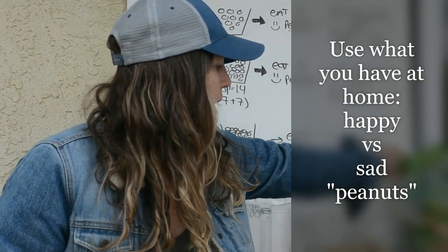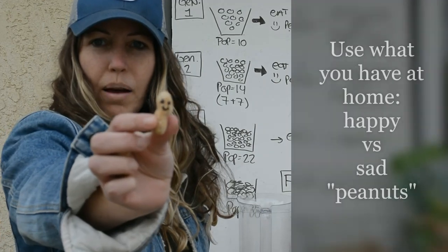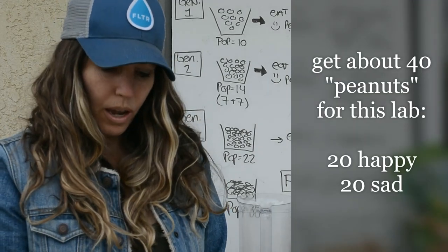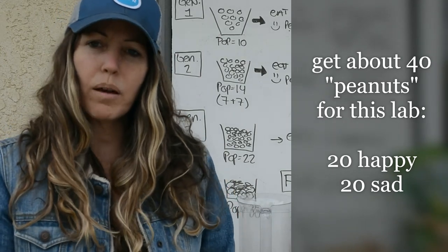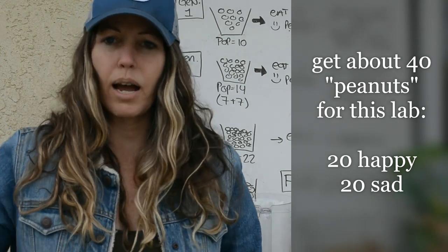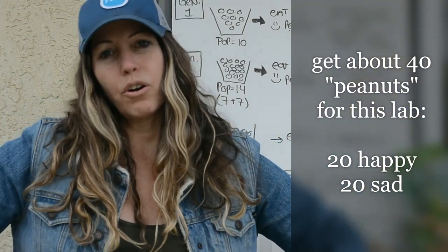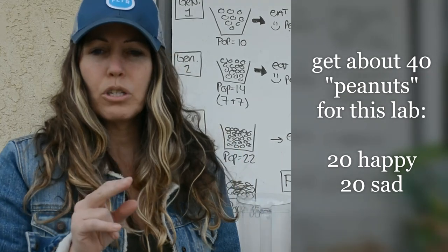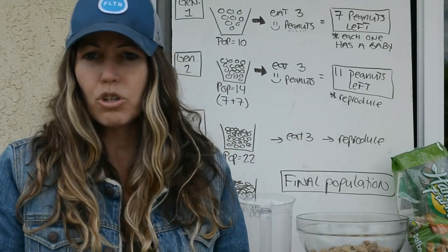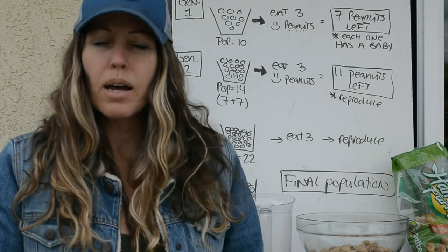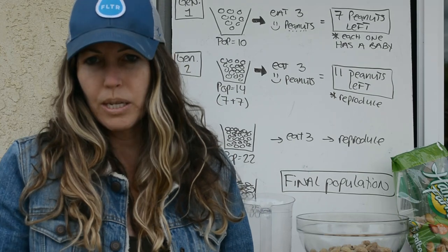I've taken some peanuts and labeled some of them with a marker with a happy face, and labeled others with a sad face. If you have Teddy Grahams, ones with arms up are happy and arms down are sad. Whatever you choose — gummy bears or cookies — just have one that's happy and one that's sad, but the same species.